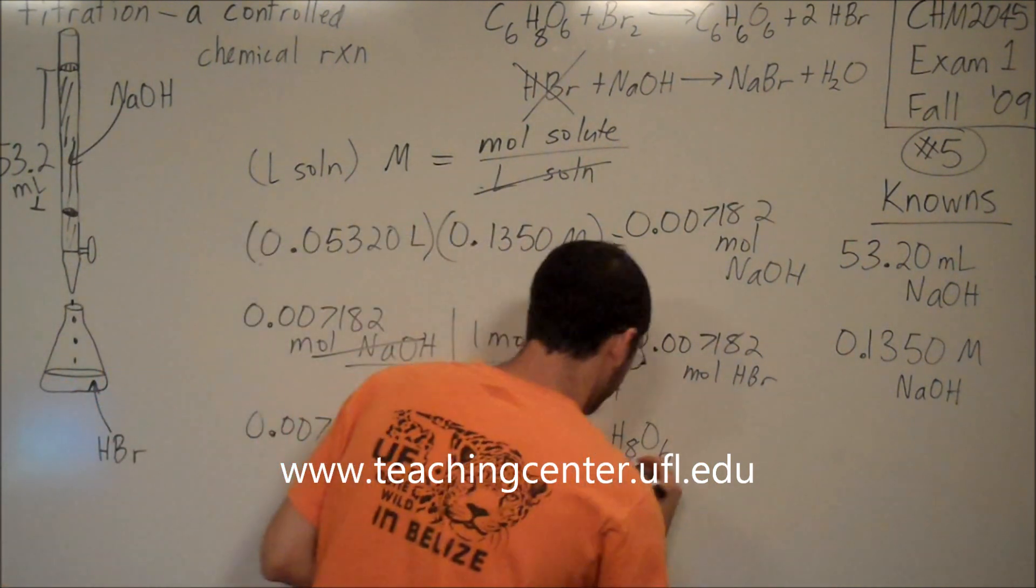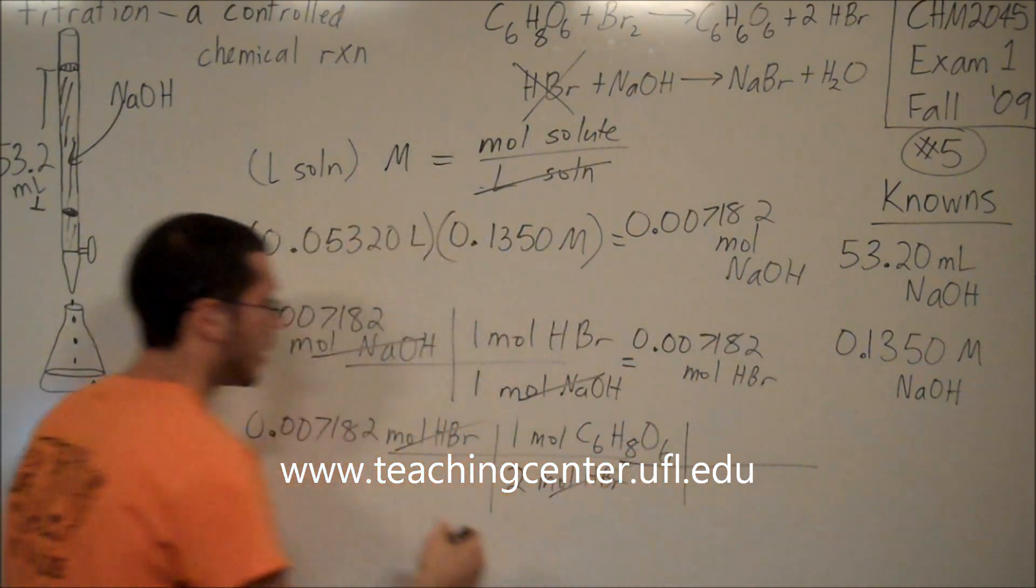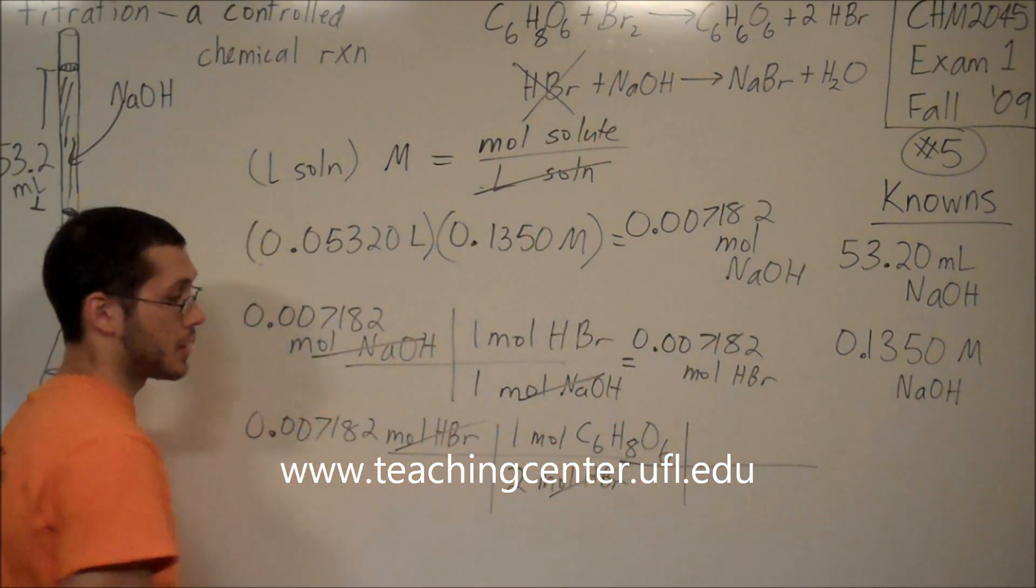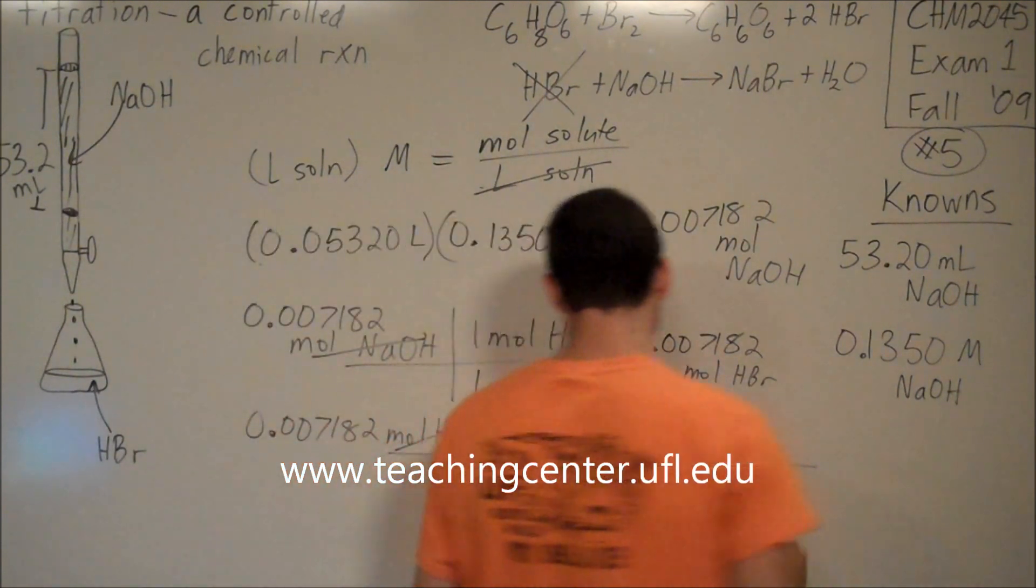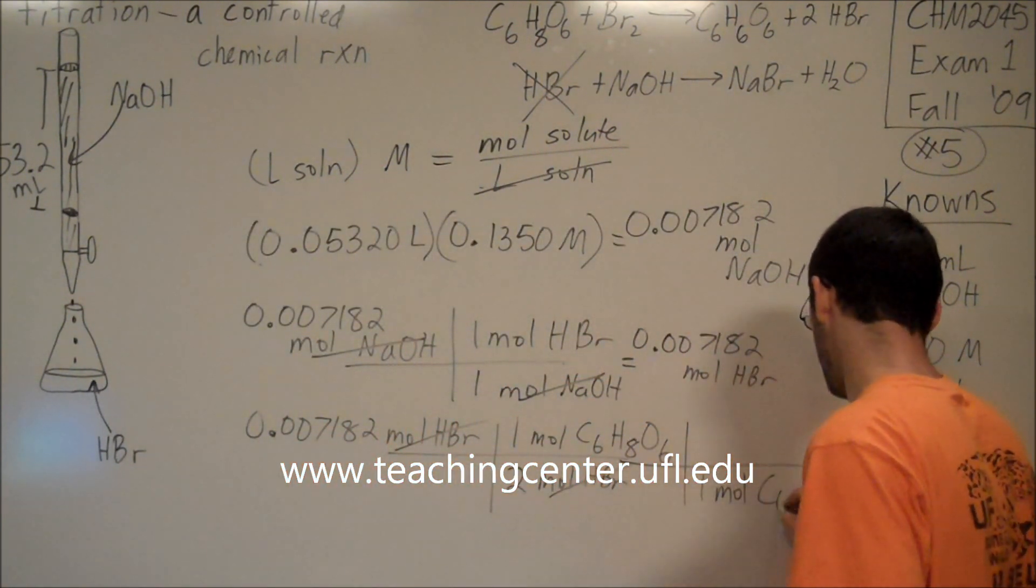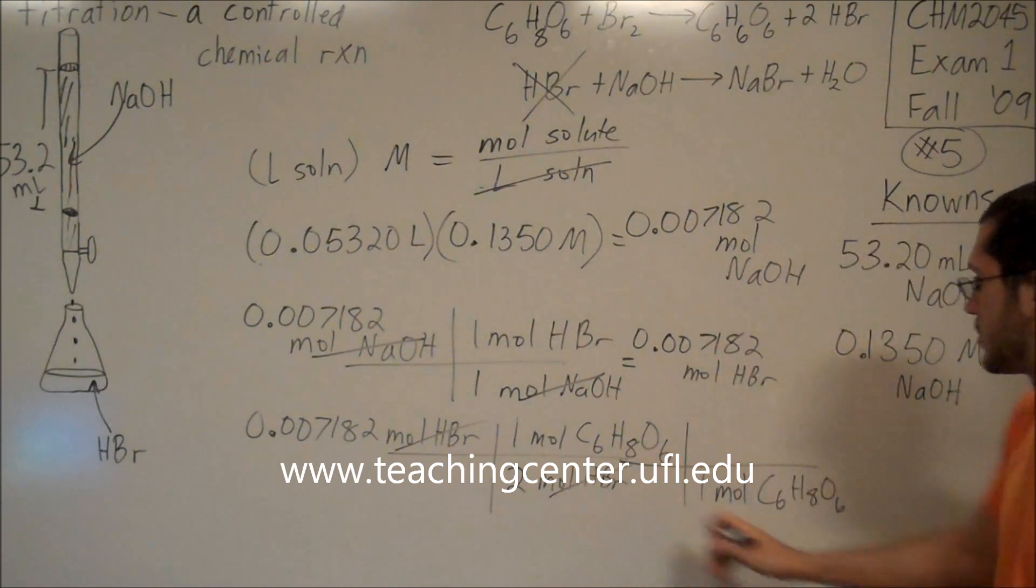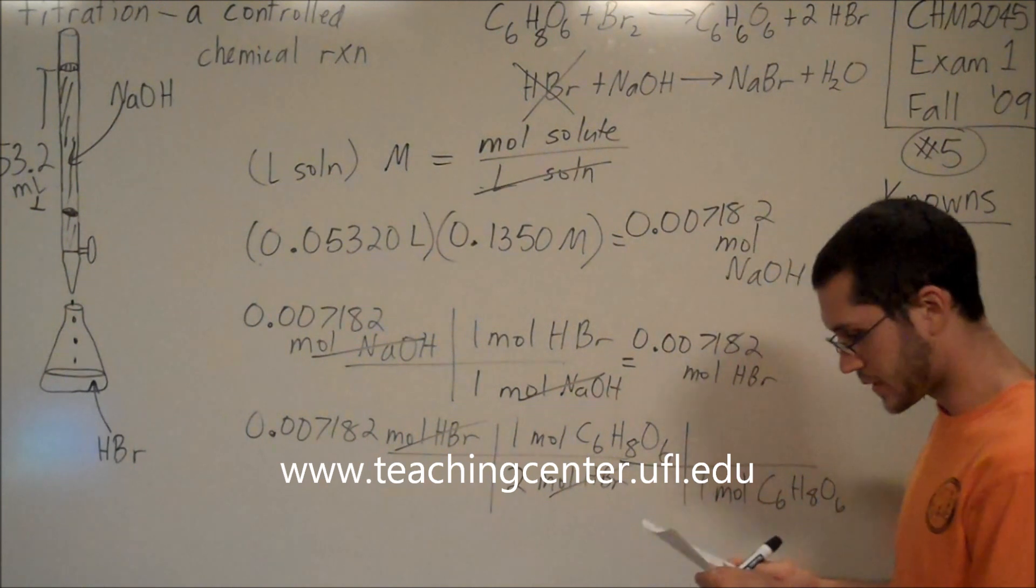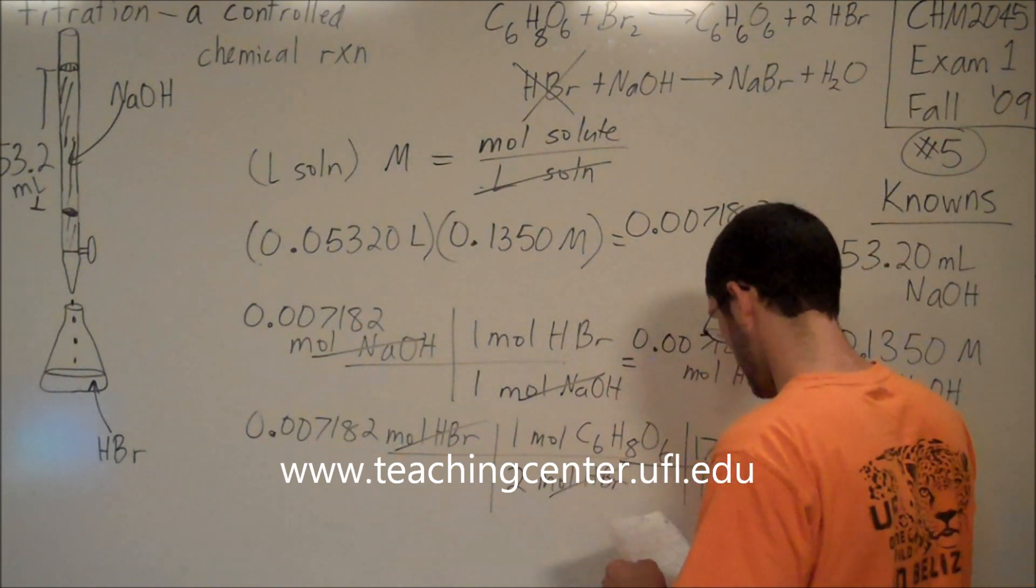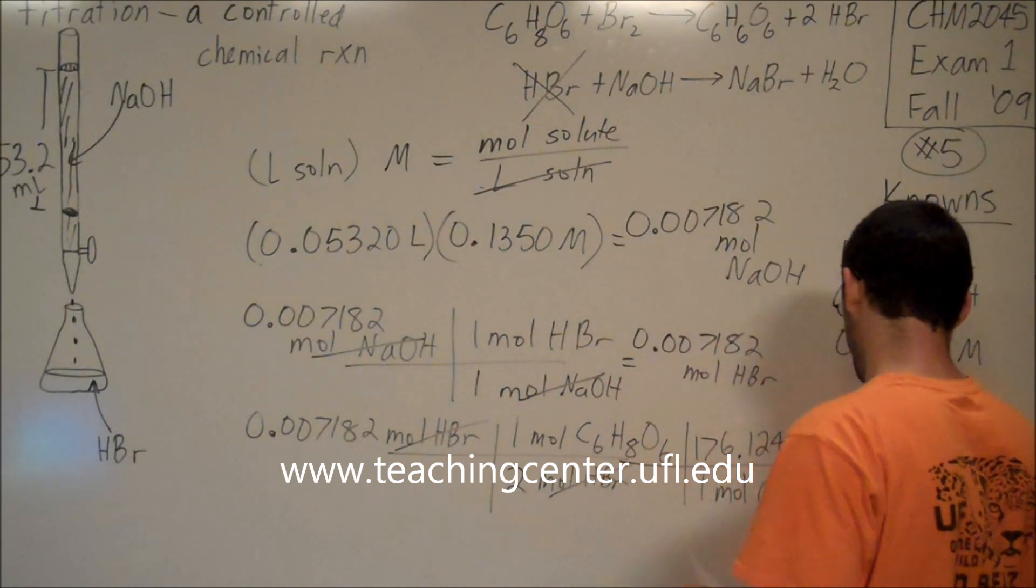And then, I'm not looking for moles of vitamin C. I'm looking for milligrams of vitamin C. So first I'm going to go to grams of vitamin C through the molar mass, which turns out to be 176.124 grams of vitamin C.